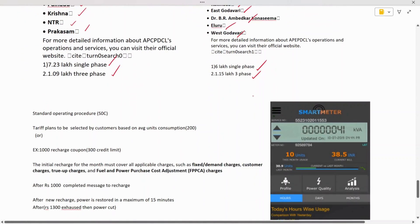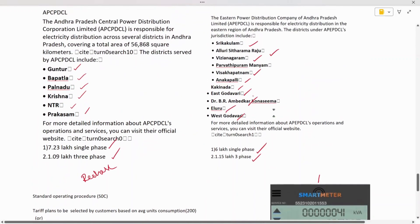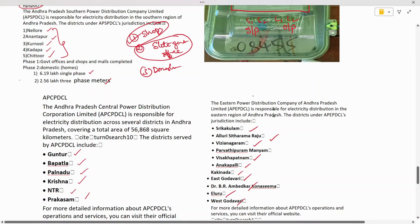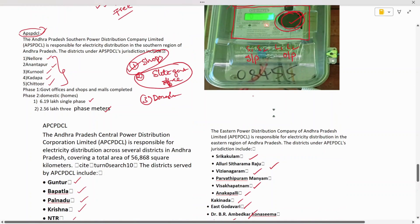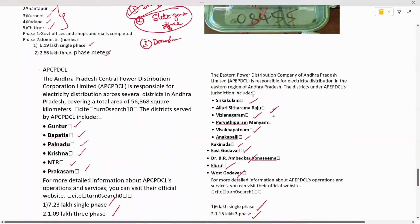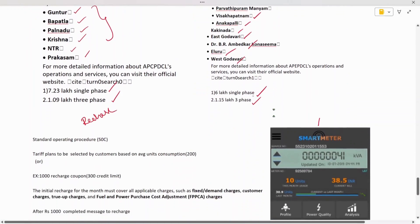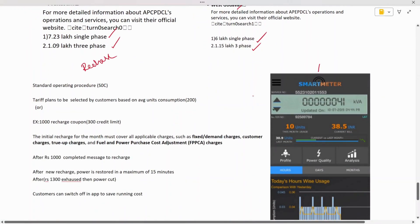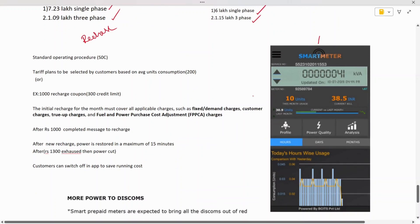For recharging, an app is provided by your distribution corporation depending on your location. For example, if you're in Nellore, you'll get an app from AP SPDCL. If you're in the CPDP SPDCL area, an app will be provided by that distribution corporation. The app interface shows how many units are there and what your consumption was.